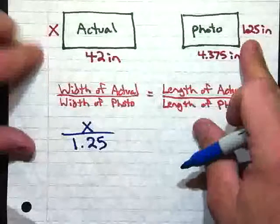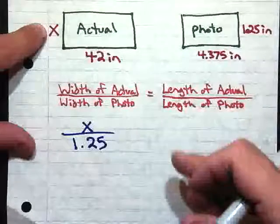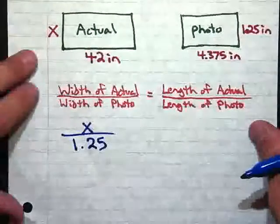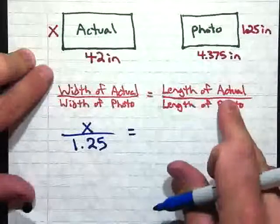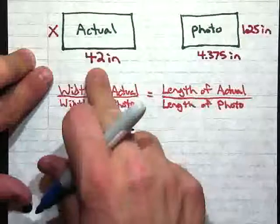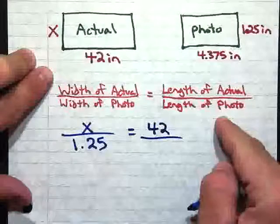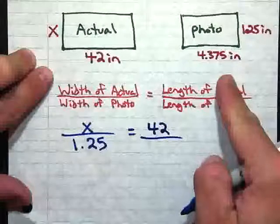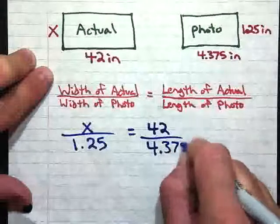Notice that I paired my widths up. So I have the width over the width. That's exactly how we want to do it when we solve, when we write our proportions out. And I'm going to set that equal to the length of my actual, which is 42 inches, over the length of my photo, which is 4.375 inches.